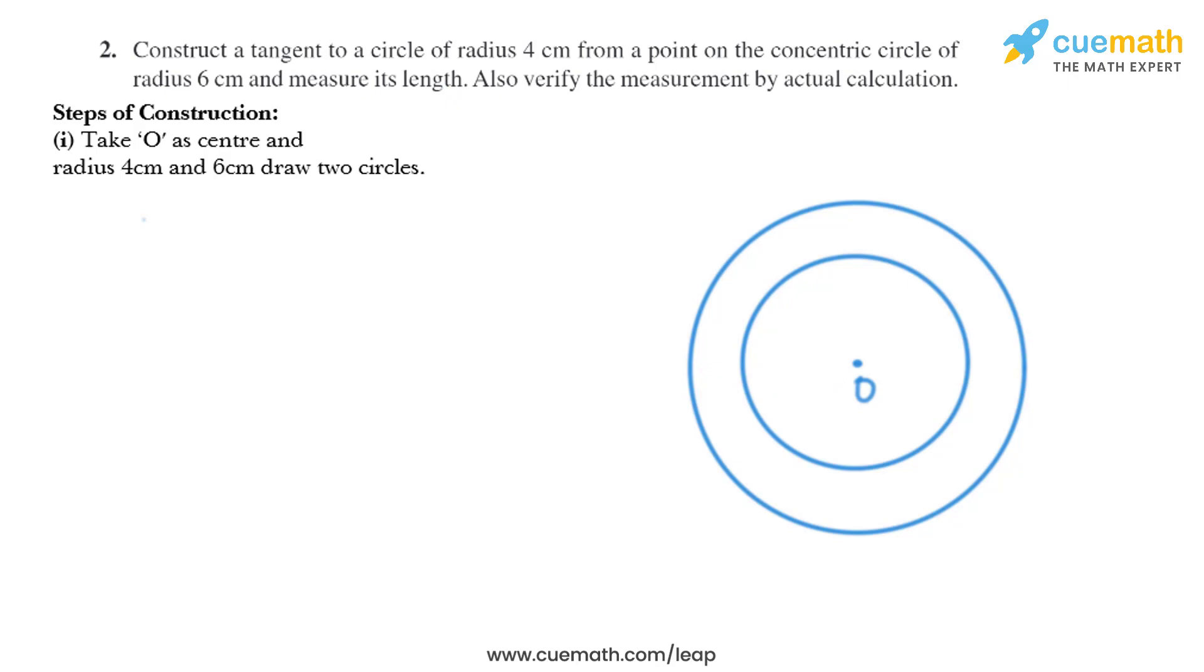Now in the next step, take a point P on the bigger circle and join OP. So we'll take this point as P and we need to join O and P. So we need to draw a line to join O and P like this.